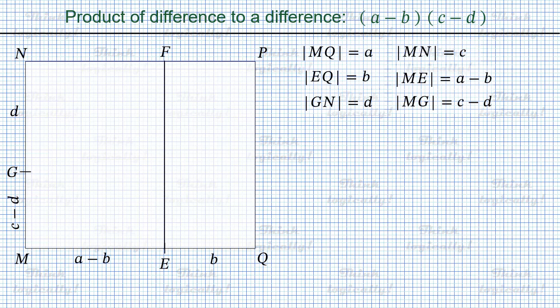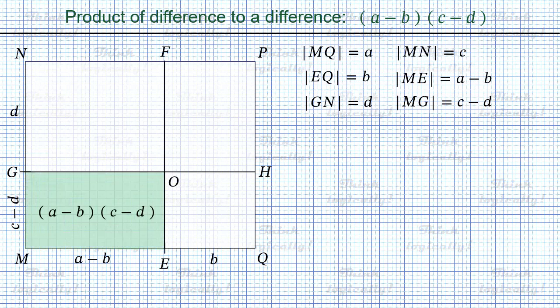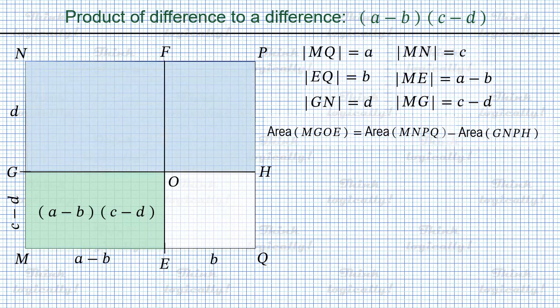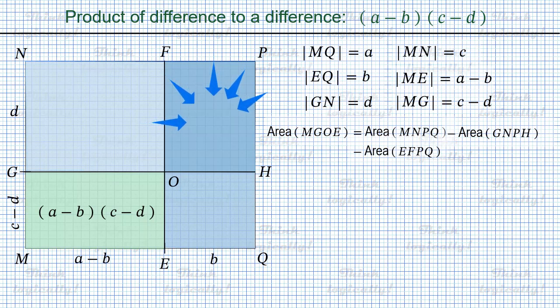And as you certainly guessed, we draw segment GH parallel to sides MQ and NP, where point H belongs to the opposite side PQ. Again, we use letter O to denote the point where lines EF and GH meet. This time we need to find the area of rectangle MGOE, which is a minus b times c minus d. To find this area, we subtract from the area of the whole rectangle MNPQ the areas of rectangles GNPH and EFPQ. As a result, the area of rectangle OFPH is subtracted twice. In order to neutralize this effect, the area of rectangle OFPH has to be added back.